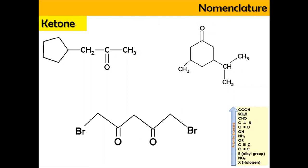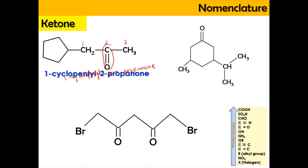Now we're going to do the naming for ketone examples. For the first case, we have three carbons — 1, 2, and 3 — and we can see it is a ketone because the carbon is attached with two alkyl groups, giving 2-propanone. At carbon number 1, it is attached with a cyclopentyl group (since it becomes a substituent, it is cyclopentyl). We denote it at carbon 1, so the full name is 1-cyclopentyl-2-propanone.